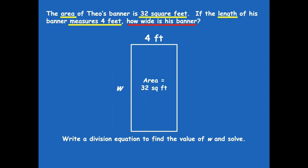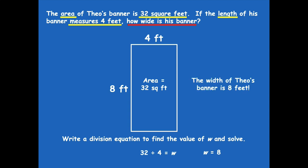Make sure to pause if you need more time. Here's the equation: 32 divided by 4 equals w, and w equals 8. So you replace w with 8 feet — the width of Theo's banner is 8 feet. You could use division, but if you're not confident with division, use multiplication or skip counting. Count by fours until you get to 32. Don't let division intimidate you — you guys got this. You're rock stars!